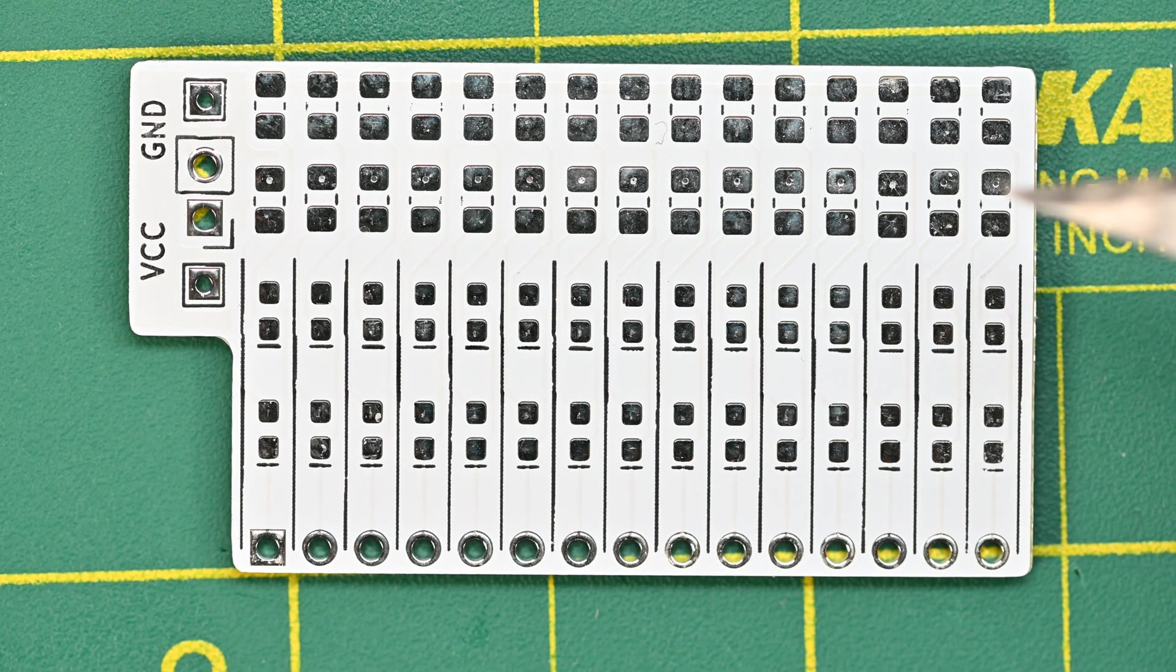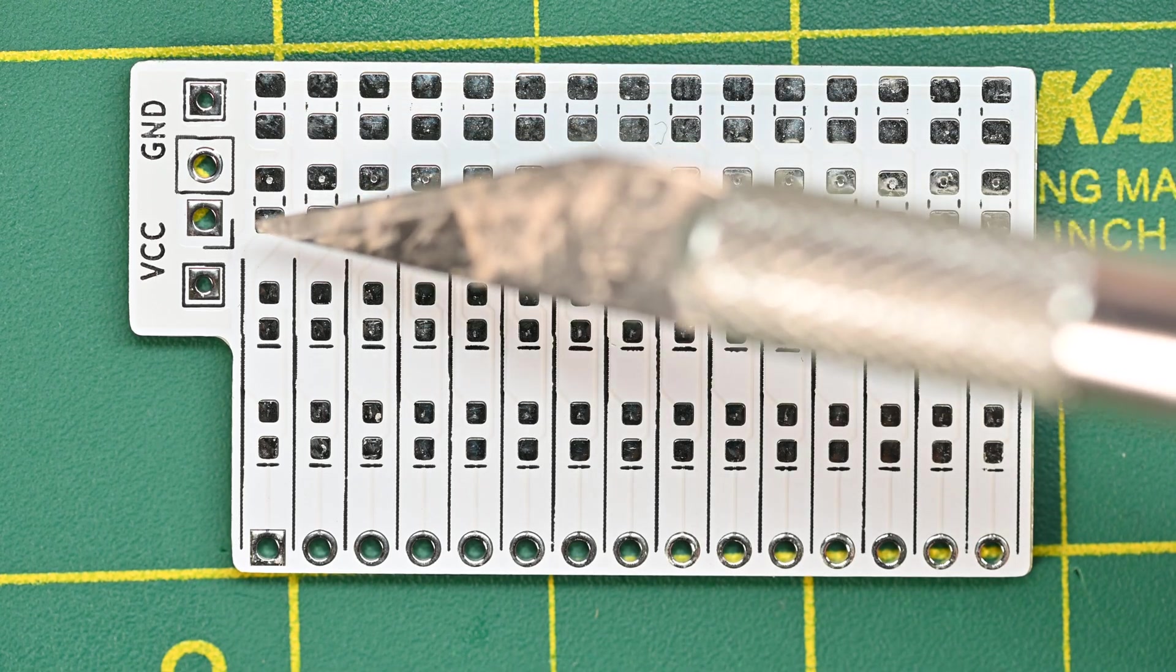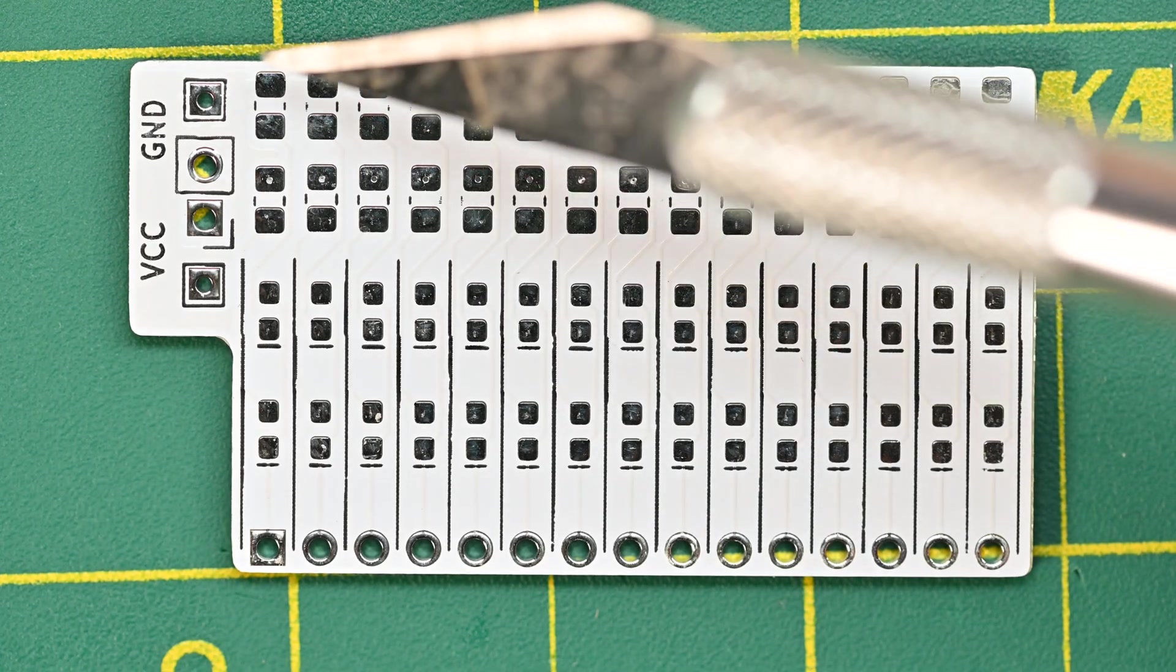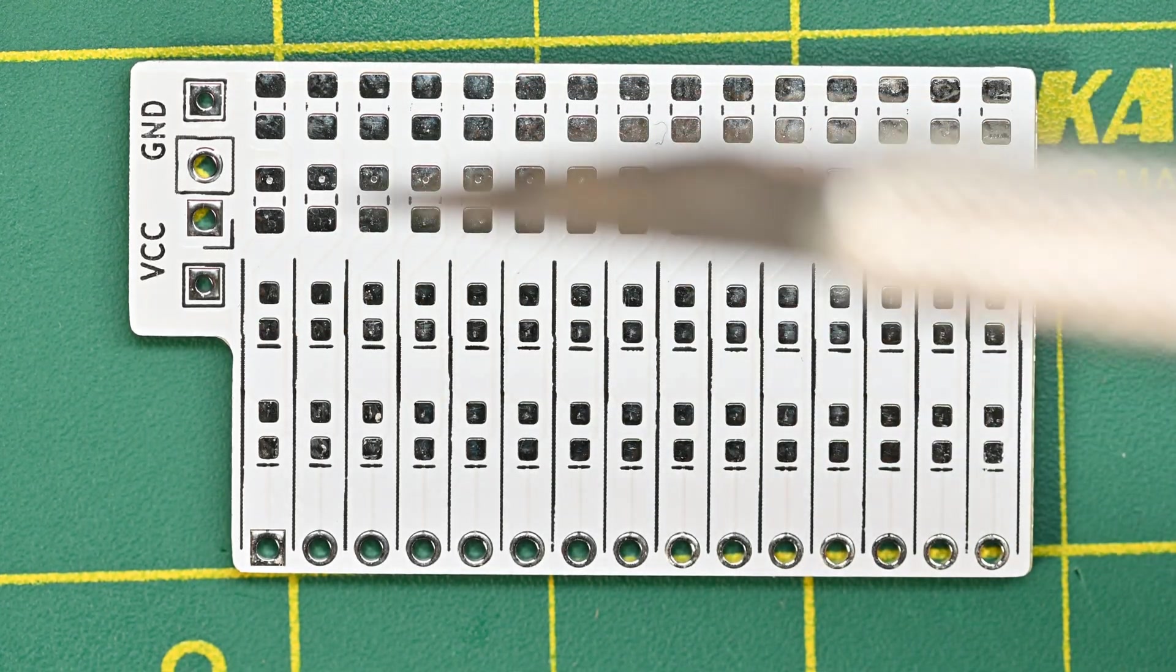Then over here I have resistors. The first row of resistors is for the first row of LEDs, the second row of resistors is for the second row of LEDs.